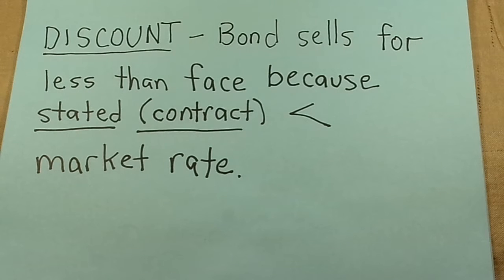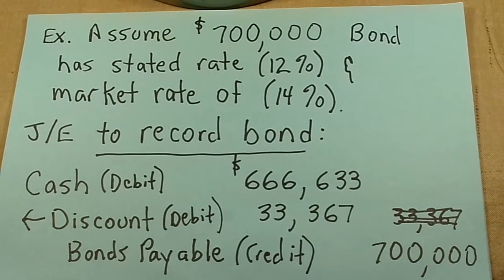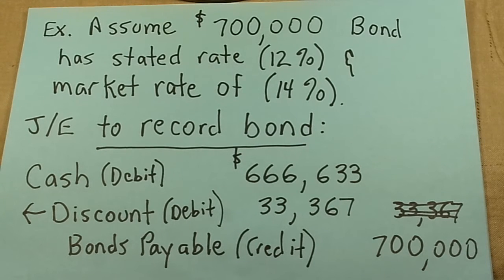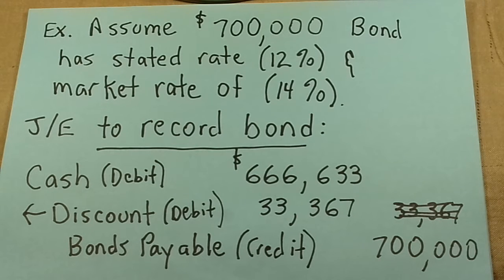A discount, on the other hand, occurs when the bond sells for less than the face amount because the stated rate on the bond is lower than the market rate. For example, assume that a $700,000 bond has a stated rate of 12%, but the market rate today is 14%. This is not a real good deal for investors, so we can only get $666,633 today when we sell these — we debit that amount. On the other hand, the bond payable — the amount we're going to have to repay — is $700,000. The difference is a discount on the bond payable, which we call a contra liability. If liabilities typically have credit accounts, this has a debit account.